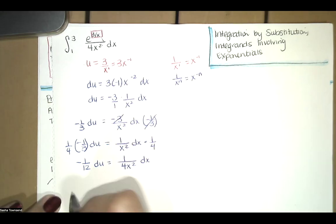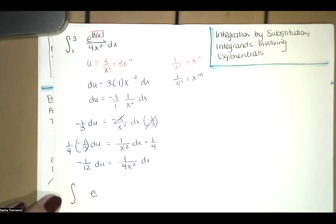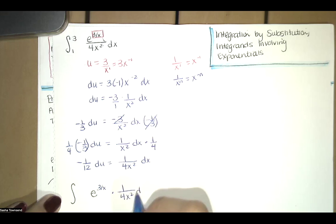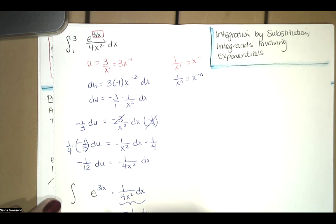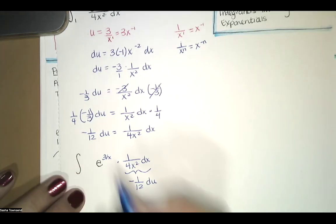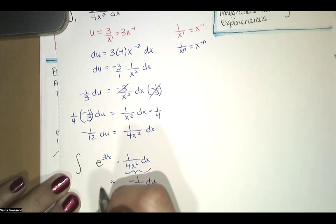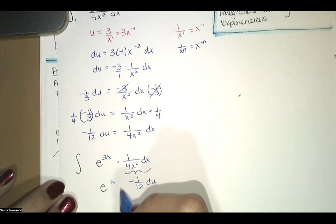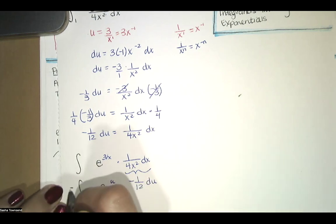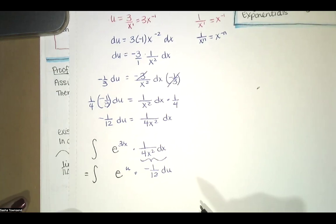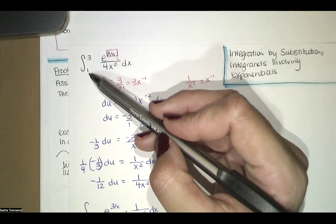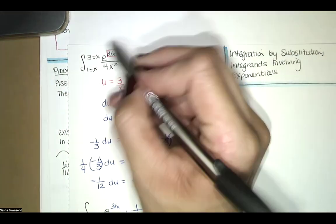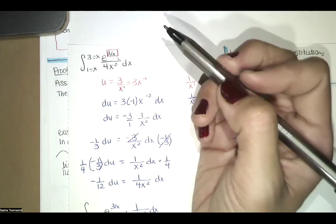We can now rewrite everything in terms of u. We write this as e to the 3 divided by x times 1 over 4x squared times dx, and this turns out to be negative 1/12 du, while e to the 3/x becomes e to the u. The original integral was a definite integral, going from x equals 1 to x equals 3 to find the net area under the curve.